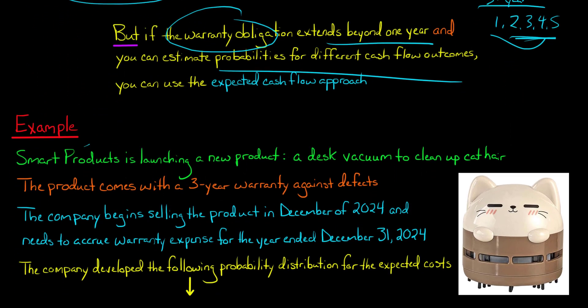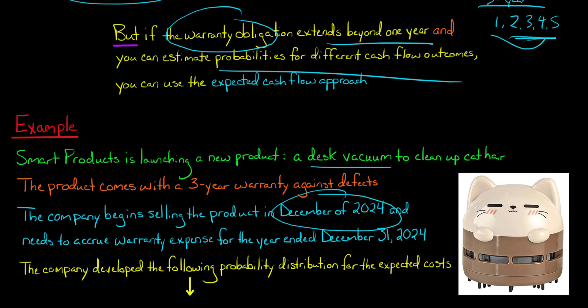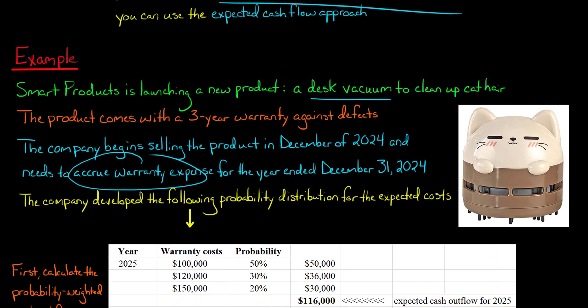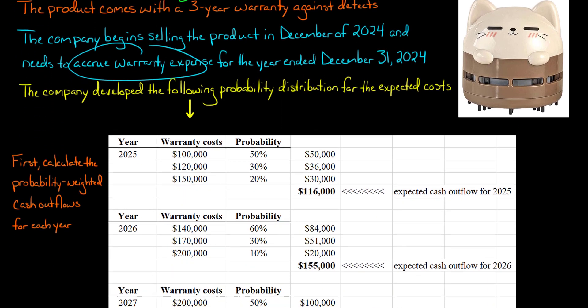Let's say there's a company called Smart Products. They're launching a new product, which is a desk vacuum that cleans up cat hair — so if you work from home and have a number of cats, you know the problem. The product comes with a three-year warranty against defects. The company is going to begin selling the product in December of 2024, but their fiscal year ends on December 31st, 2024. So they're going to need to make an adjusting journal entry to accrue warranty expense for the year ended December 31st, 2024. It's a three-year warranty, so they're going to incur costs in years 2025, 2026, and 2027.